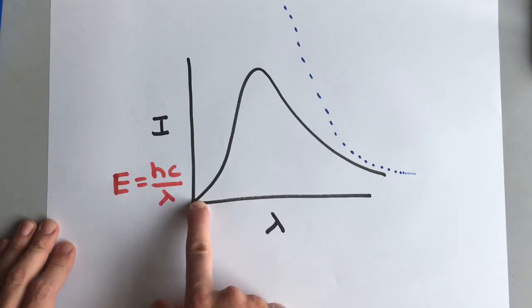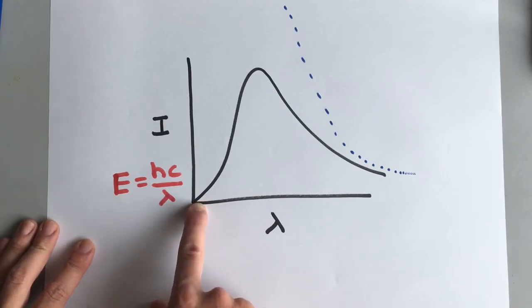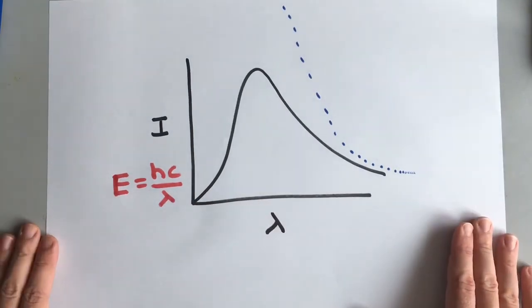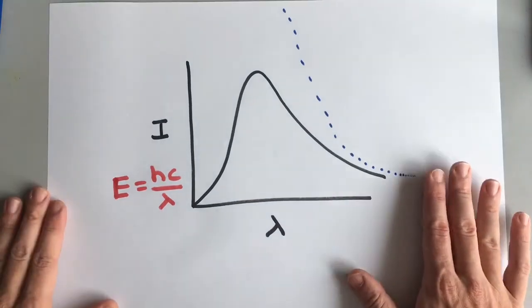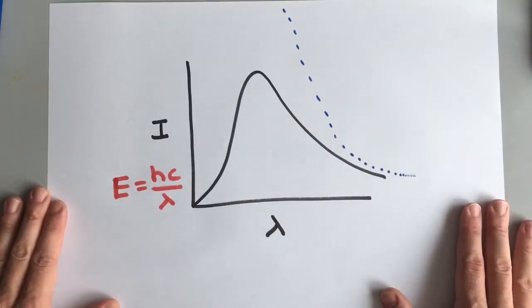So the intensity is very low. So quantum physics and the idea of waves being particles, light waves being particles called photons, is the only way we can explain blackbody curves.